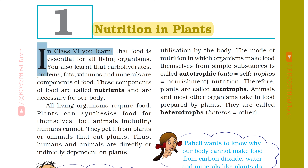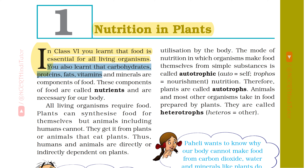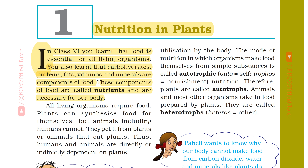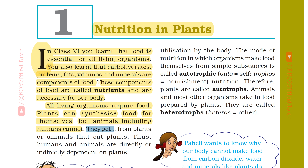In Class 6, you learned that food is essential for all living organisms. You also learned that carbohydrates, proteins, fats, vitamins and minerals are components of food. These components of food are called nutrients and are necessary for our body. All living organisms require food. Plants can synthesize food for themselves, but animals including humans cannot. They get it from plants or animals that eat plants. Thus, humans and animals are directly or indirectly dependent on plants.